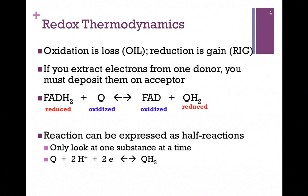You can think of this as simply the sum of two half reactions. So we can look at one substance at a time. In this case, let's look at Q. In the oxidized form, it's going to take two protons and two electrons to become ubiquinol, or QH2.